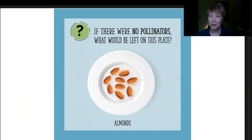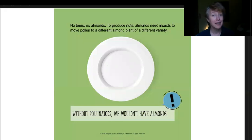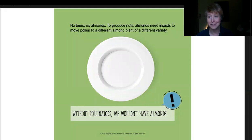Now we're going to move into going through some of these plates and looking at food. The activity here is thinking: if there were no pollinators, what would be left on this plate? For almonds, it's actually nothing. If we didn't have bees, we wouldn't have any almonds, because almonds need insects to move pollen to an almond plant of a different variety. This is a really dramatic example where it's clear that without bees, we simply wouldn't have almonds to eat.